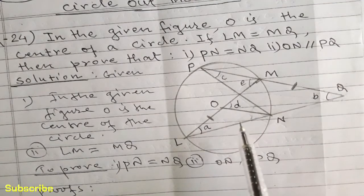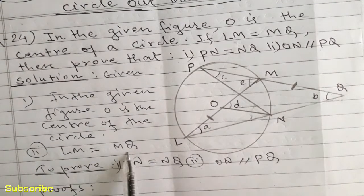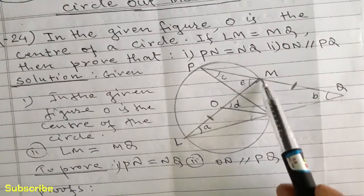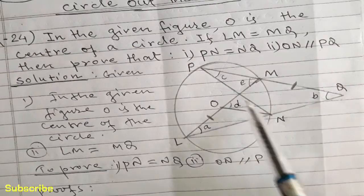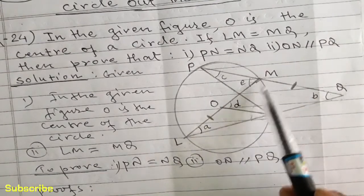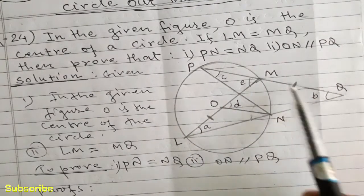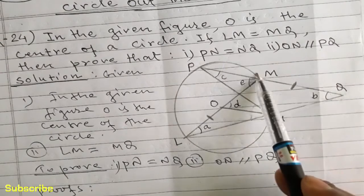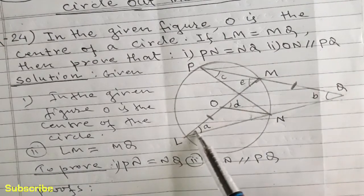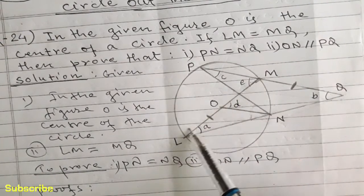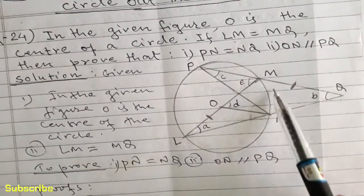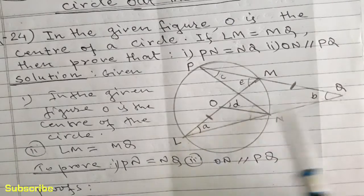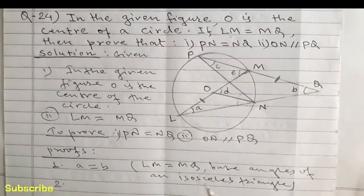In statement number one, we are given that LM is equal to MQ. So we can write A is equal to B. Angle A means angle MLQ and B I have supposed as angle MQL. Since two sides LM and MQ are equal, we can write A is equal to B.